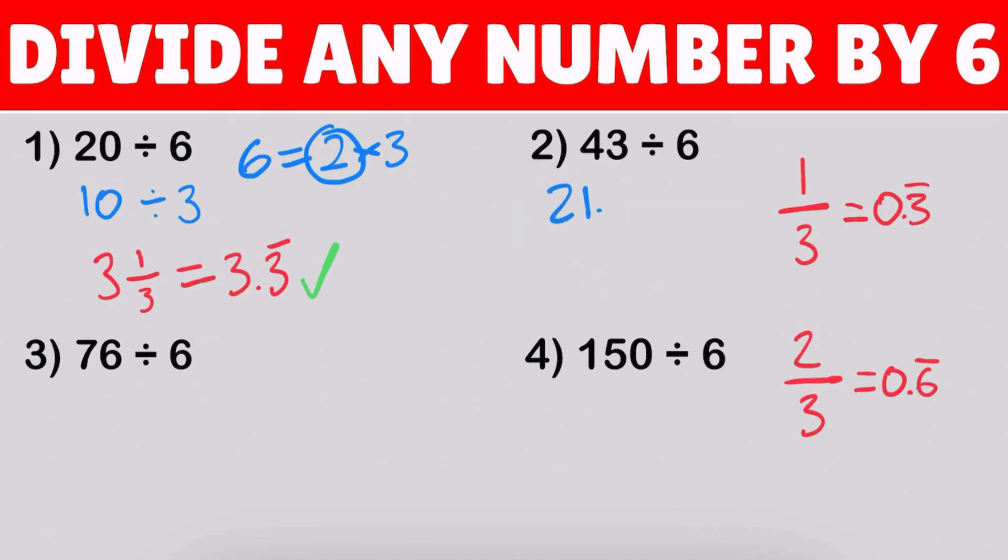So, we can now write 21.5 divided by 3. And, so, now we can do the second step of dividing, which is dividing by 3 now. And, the trick that we can use to do this is actually by making this number 215 divided by 3. Notice what we've actually done here is moved this decimal point after the 5. So, now it's right there. So, let's do this part of the equation now.